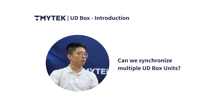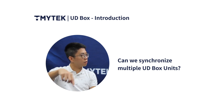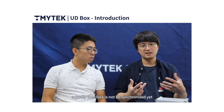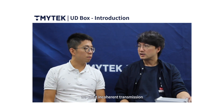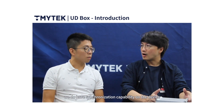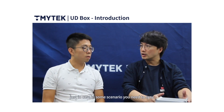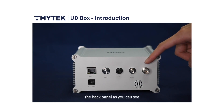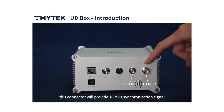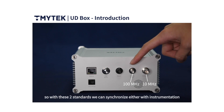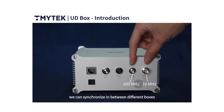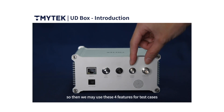Since we have two separate UDBOX units, they need to be synchronized. In most real-world communication, the clock has not been synchronized — we call it incoherent transmission. But we do have synchronization capability on our device. In some scenarios you need to sync between TX and RX. On the back panel, we provide a 10 MHz synchronization signal and also a 100 MHz reference. With these two signals we can synchronize either with instrumentation or between different boxes. That's a very useful feature for test cases.